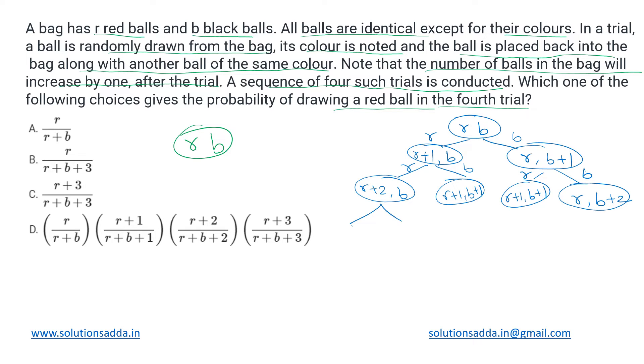Moving on to the third trial, each of these will have two more options. This one will give r plus three, b, and r plus two, b plus one. In the same way, each of these will also have two more configurations. Now we have to find the probability of drawing a red ball in the fourth trial.